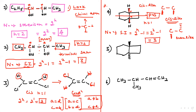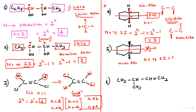Fifth question: if the compound is trans-like, passing a line through the center shows no plane of symmetry — one group points up and one points down. Both carbons are chiral, so we apply 2^n = 2^2 = 4 stereoisomers.